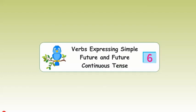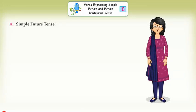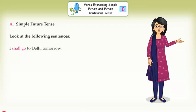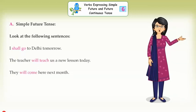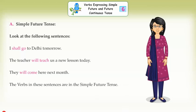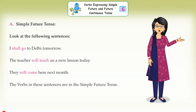Chapter 6: Verbs Expressing Simple Future and Future Continuous Tense. Simple Future Tense. Look at the following sentences: I shall go to Delhi tomorrow. The teacher will teach us a new lesson today. They will come here next month. The verbs in these sentences are in the Simple Future Tense.